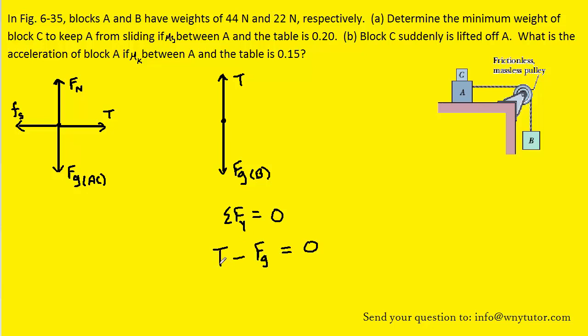The net force would be the positive directed tension because it's upward, and then the downward or negatively directed force of gravity acting on block B. Now the force of gravity acting on block B was given to us as 22 Newtons, so we can go and fill that in.